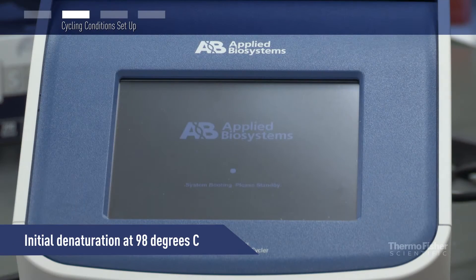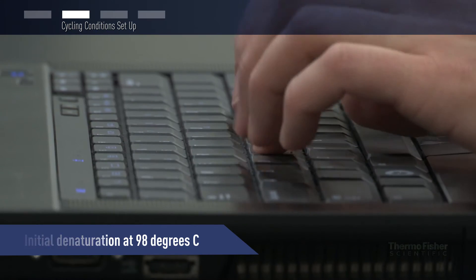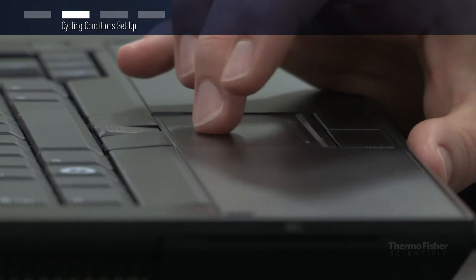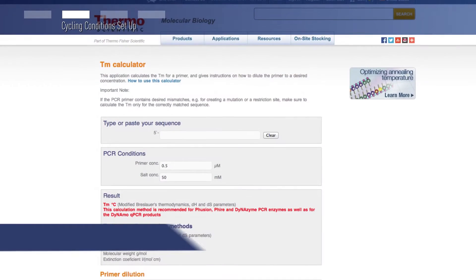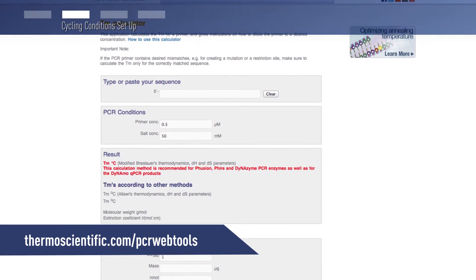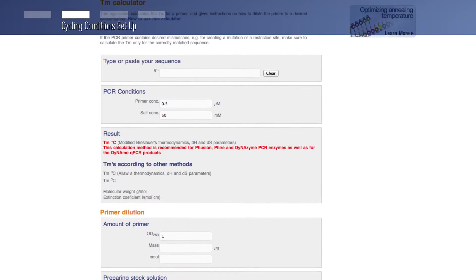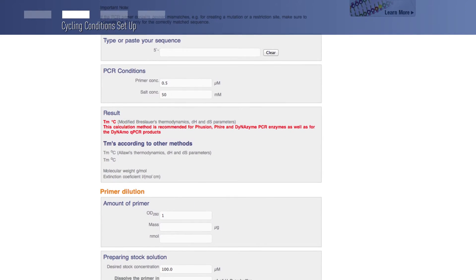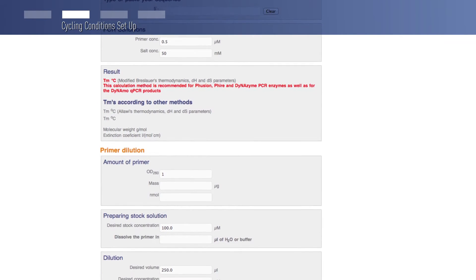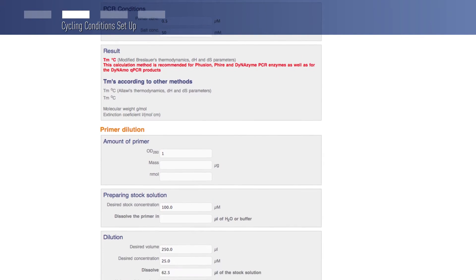DNA denaturation with Fusion polymerase is performed at 98 degrees Celsius. The annealing temperature is calculated from the primer sequence using the Thermo Scientific Fusion TM calculator on our website. Because the optimal annealing temperature for reactions with Fusion DNA polymerase may differ significantly from that of Taq-based polymerases, it should be calculated with the Fusion TM calculator for every primer pair. The annealing temperature for this experiment is 60 degrees Celsius.